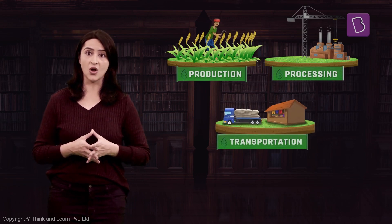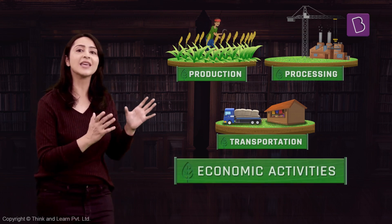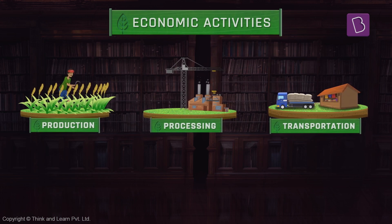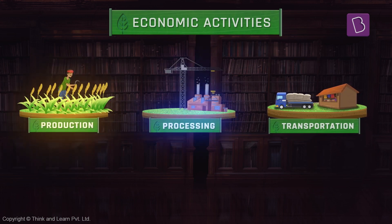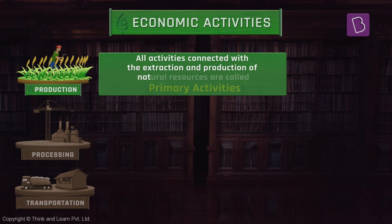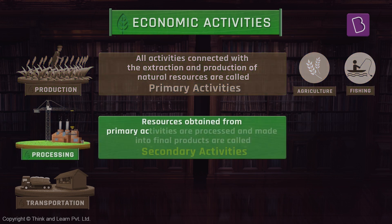This process of producing the crop, processing it in a factory, and transporting it to the shops are grouped under something we call economic activities. We can see that the activities in all three stages are different from each other. All activities connected with the extraction and production of natural resources are called primary activities.